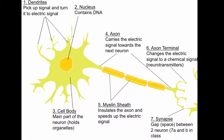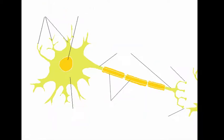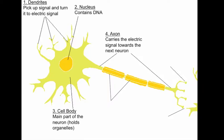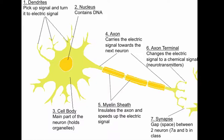You're going to want to know the names of each part and their functions, so make sure you know both. Pause the video and give it a try. One of the most important things you'll need to know is how the signal actually travels through a neuron. In class we're going to go into a lot more detail about exactly how electric charges are formed and how they pass through the neuron, but for now you just need to know the basics.